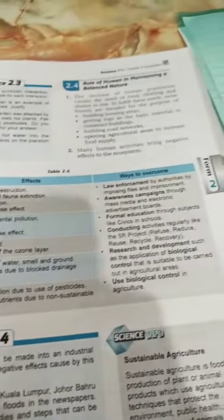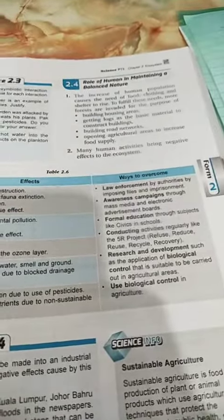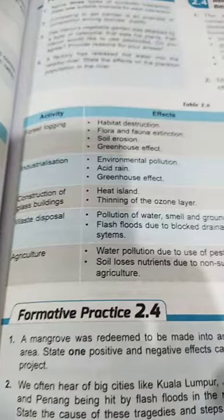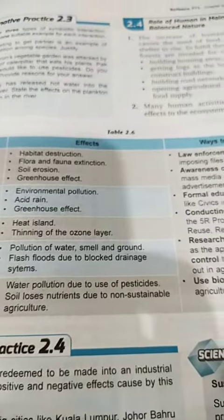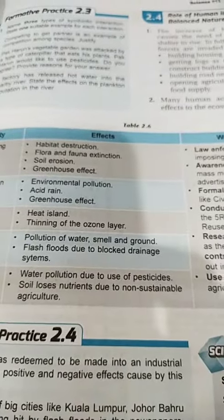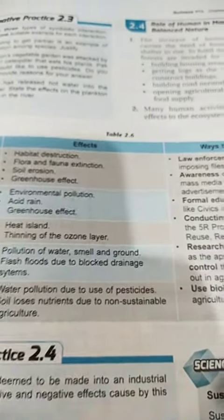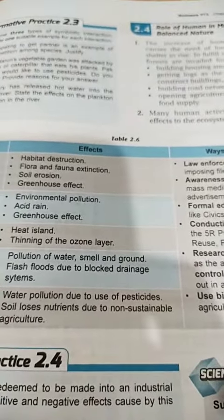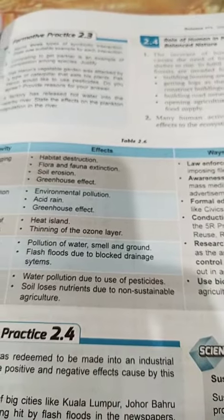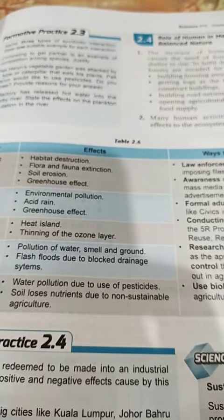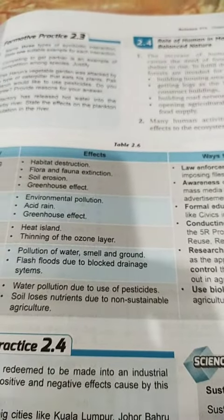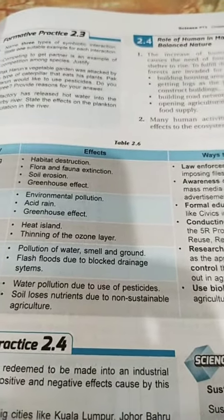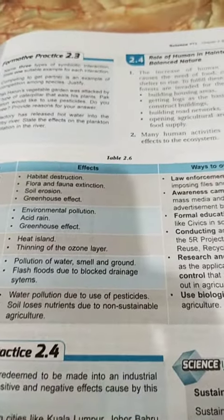For water and agriculture: water pollution occurs due to use of pesticides, and soil loses nutrients due to non-sustainable agriculture.